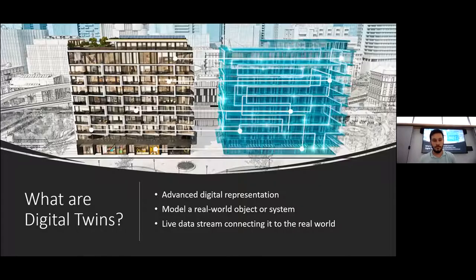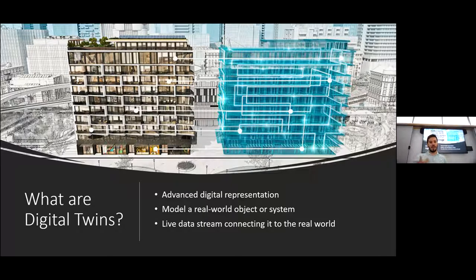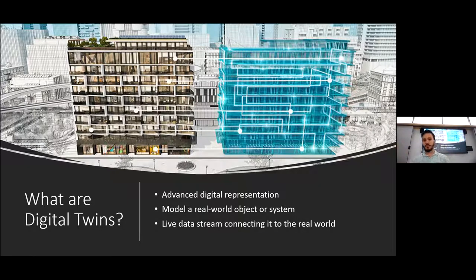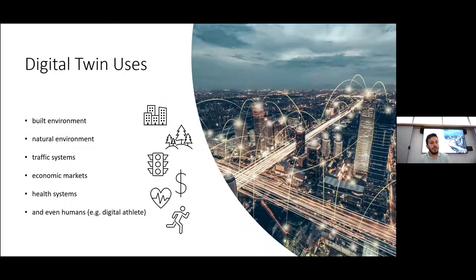In a nutshell, digital twins are advanced digital representations of a certain asset — in our case, a building — modeling a real-world object or system. It's not just about a static object; it's about the system involved with that asset. Most importantly, it connects the digital model with a live data stream from the building using sensors, creating a live link between the digital and physical model.